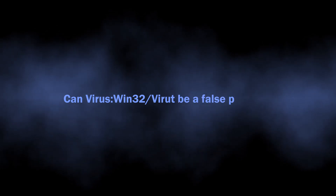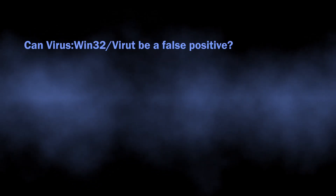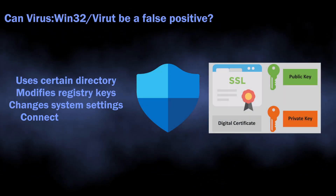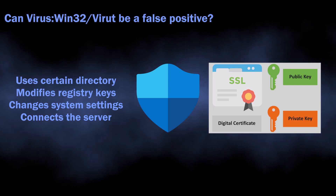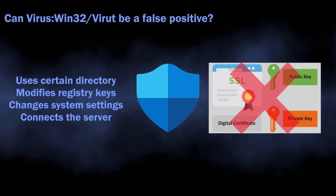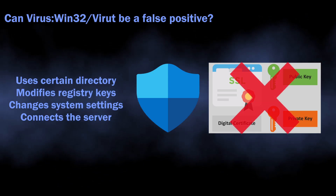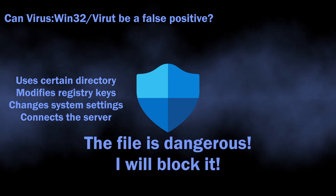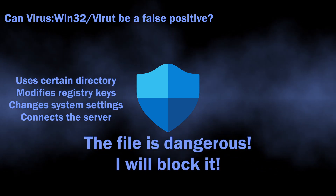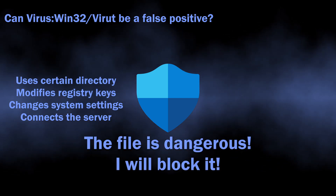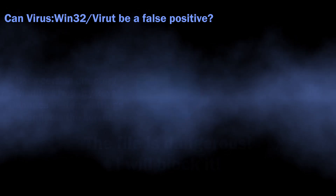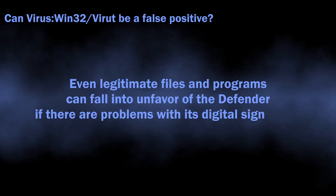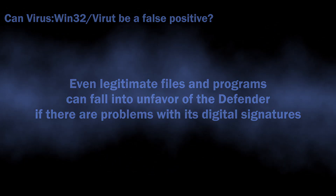There is also a possibility of this detection being a false positive. As I said, rules used for this detection are not highly reliable. If the Defender cannot find the digital certificate of the file, or it is expired, it can indicate the file as dangerous, as a lot of functions and calls that normal programs use also appear in malware. The certificate in this case is the only way to distinguish between good and bad.